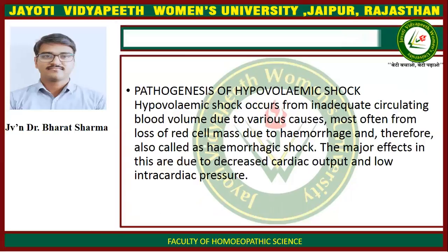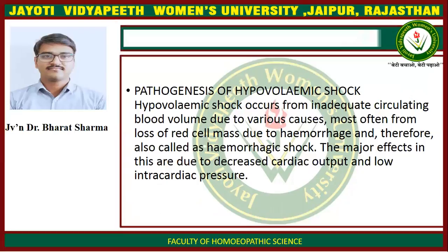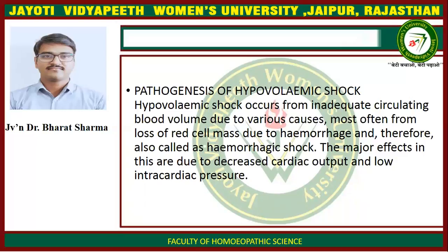Pathogenesis of hypovolemic shock occurs from inadequate circulating blood volume due to various causes, most often from loss of red cell mass due to hemorrhage, and is therefore also called hemorrhagic shock. The major effects are due to decreased cardiac output and low intracardiac pressure.